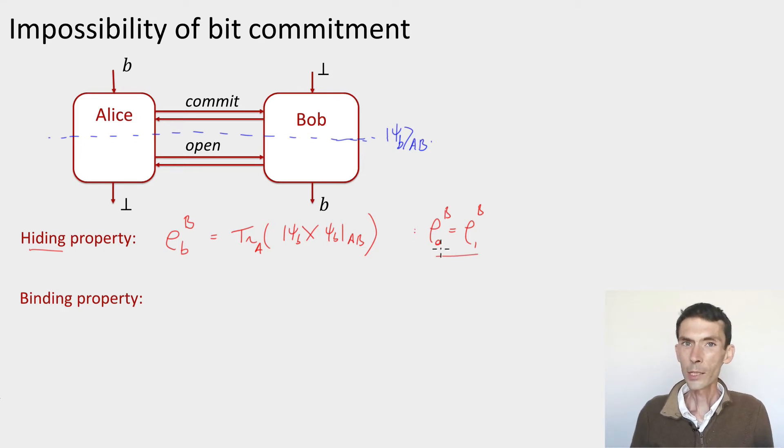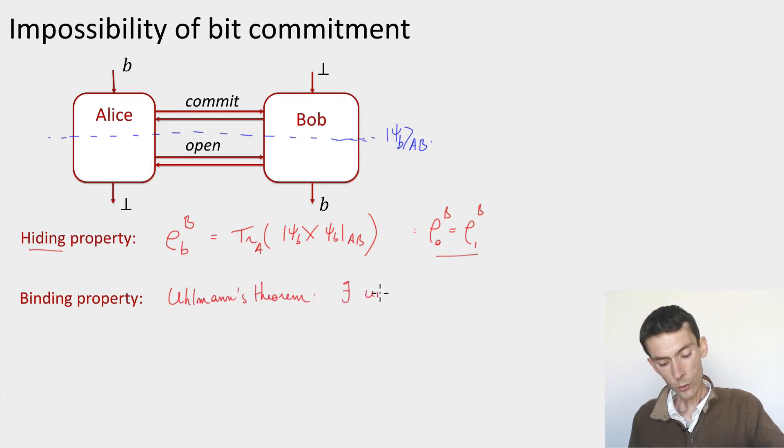Alright, but now we know what it means for two pure states to have the same reduced density on the system. It means we can apply Uhlmann's theorem. And if we apply Uhlmann's theorem, this tells us that there exists a unitary U, doesn't depend on anything, on Alice's system such that if you apply U on Alice and the identity on Bob, this is going to map the state, let's say psi_0 to the state psi_1.